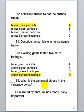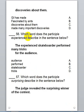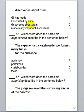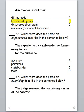Question 55: What is the participle phrase in the sentence below? 'Fascinated by ants, Jill has made many important discoveries about them.' The participle phrase is 'fascinated by ants' — it starts with the participle 'fascinated' and the rest of the phrase is 'by ants.' It describes Jill.